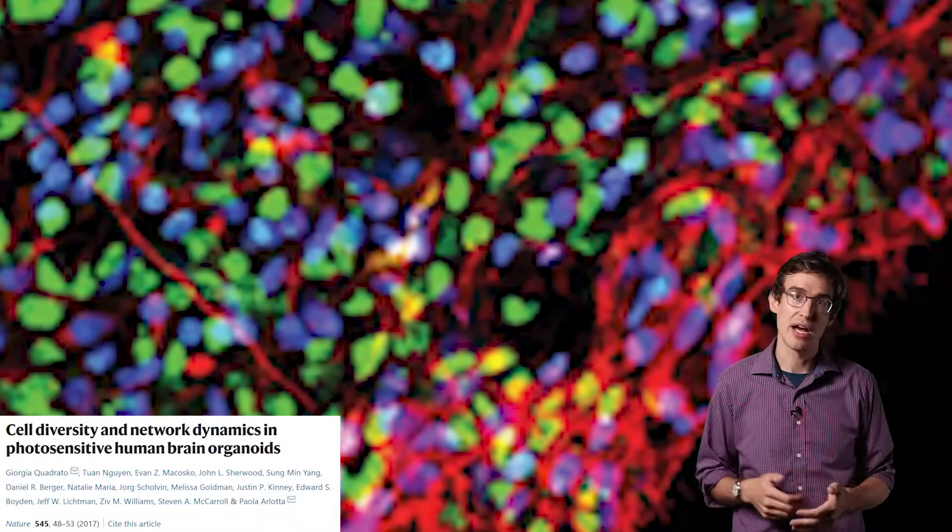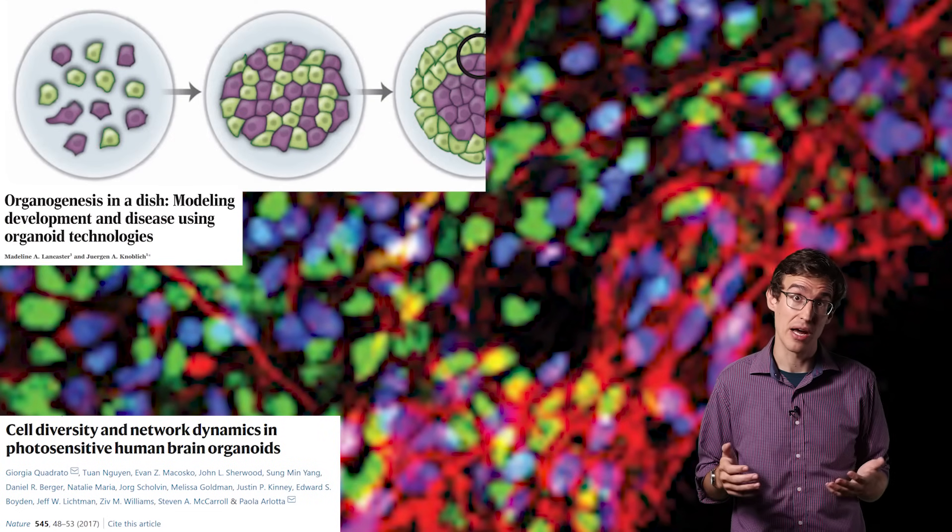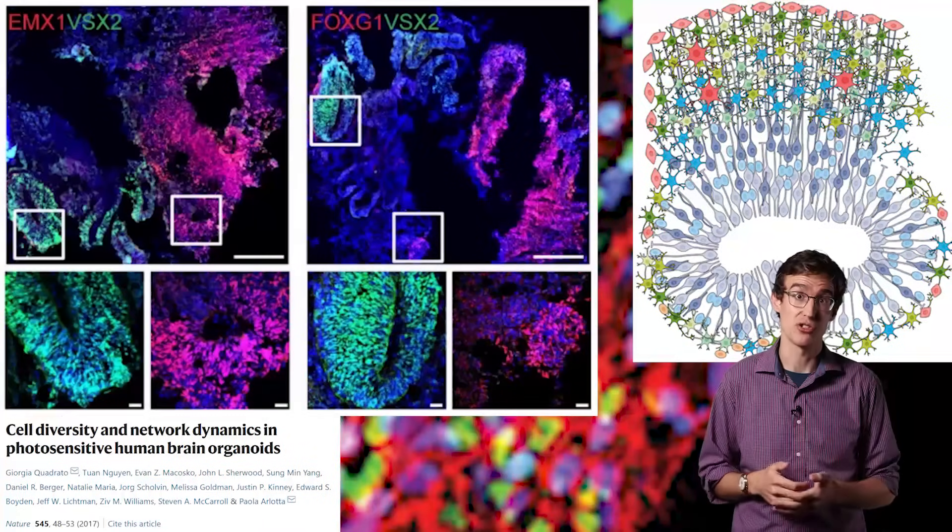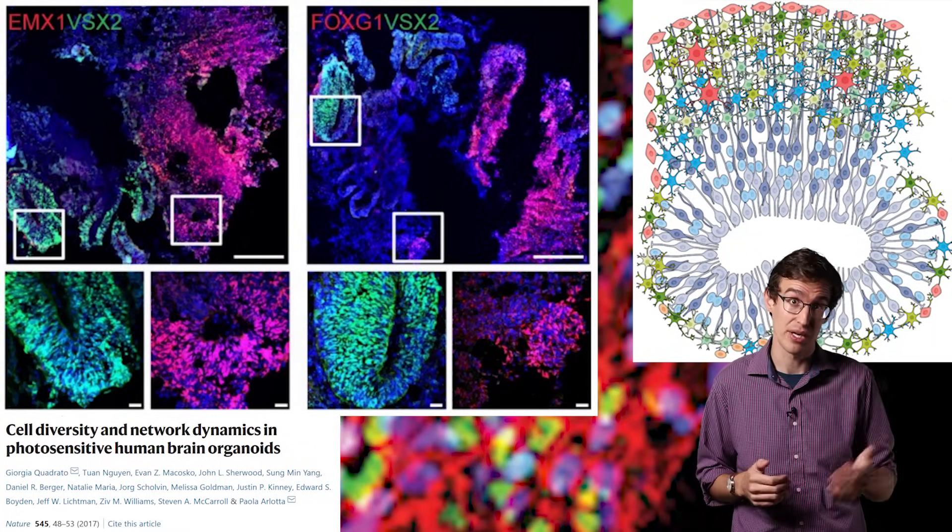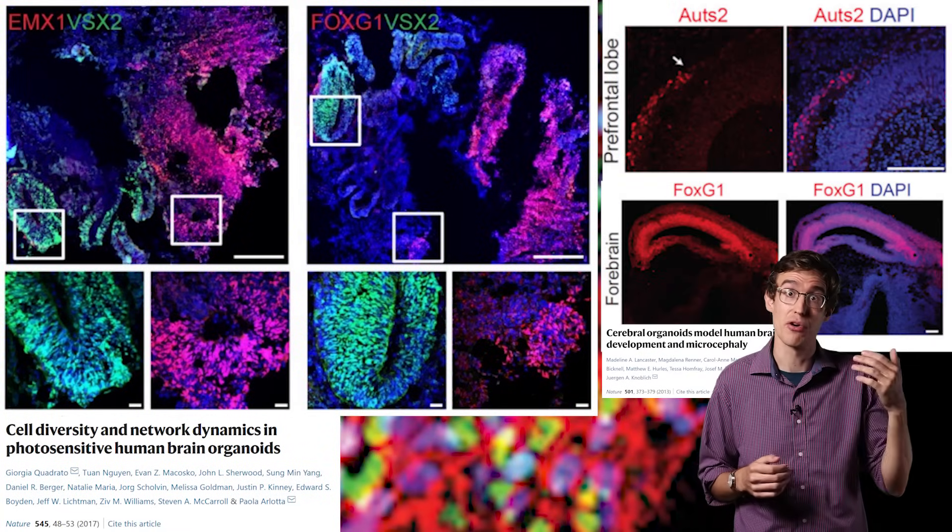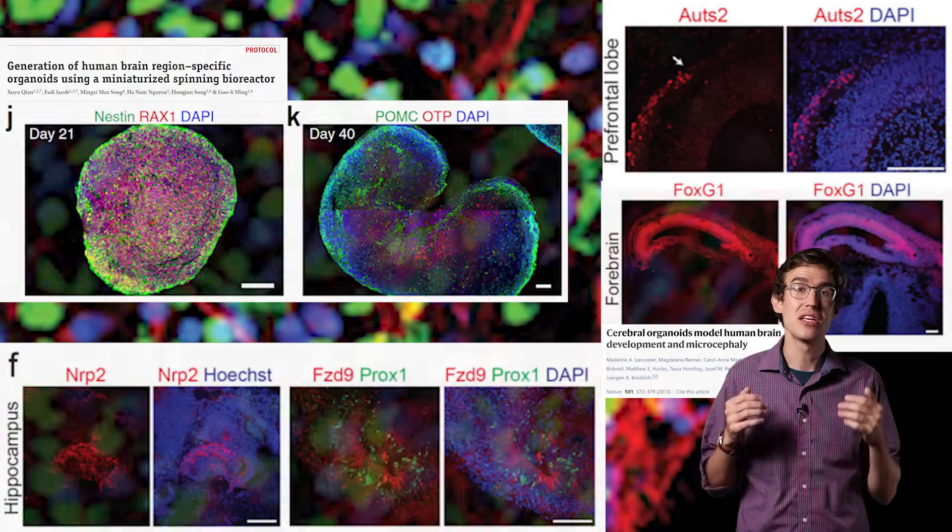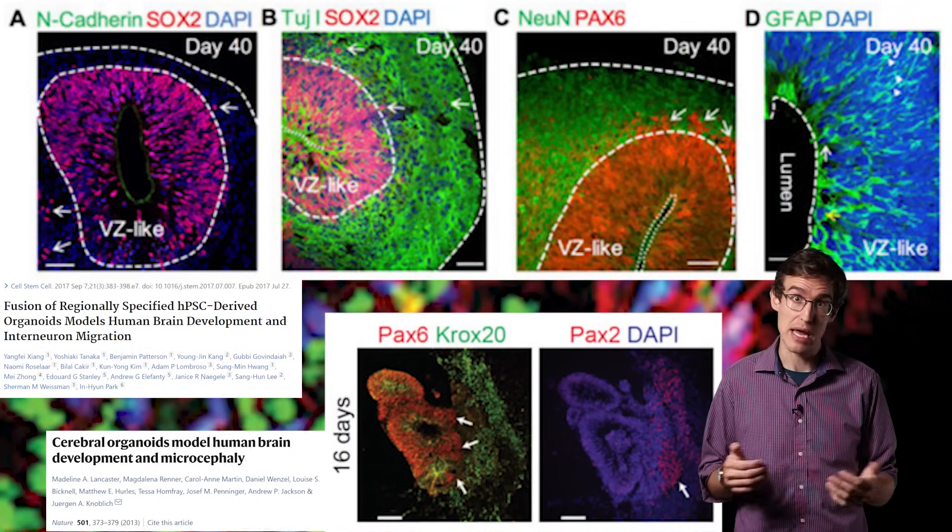Mini-brains grow all different kinds of brain cells and they self-organize into complex brain-like structures. You can even see specific regions where certain kinds of cells are dominant. Some look like the cells in prefrontal cortex, others look like the cells in the hippocampus, and you get these regional boundaries that resemble the divisions in the brain.